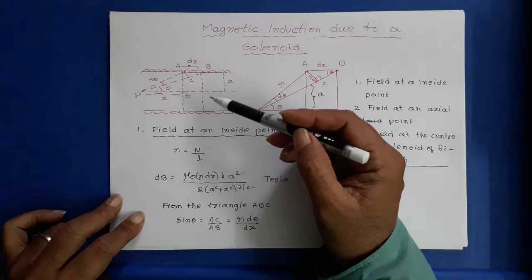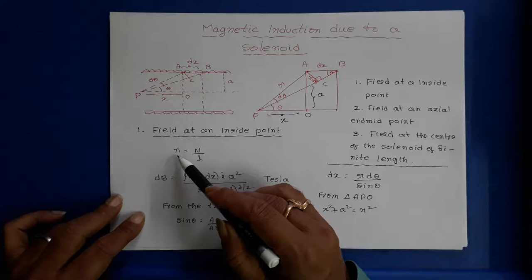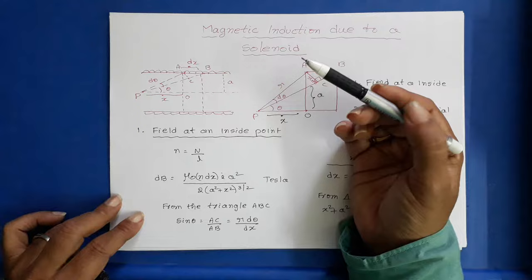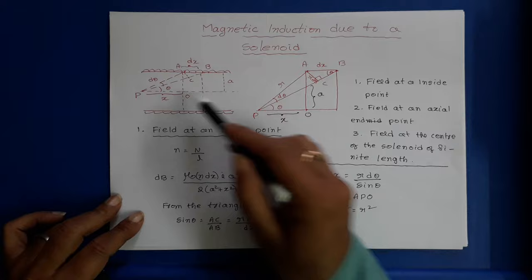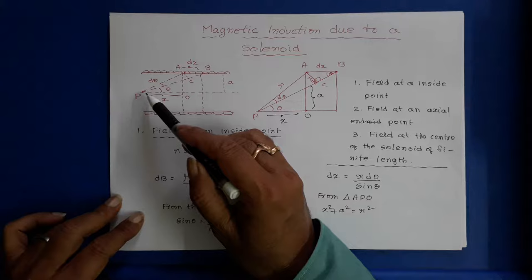Consider the solenoid having capital N turns and total length L, so number of turns per unit length is small n = N/L. The solenoid carries a current I. P is any point on the axis and inside the solenoid, and at point P I am going to find magnetic induction.